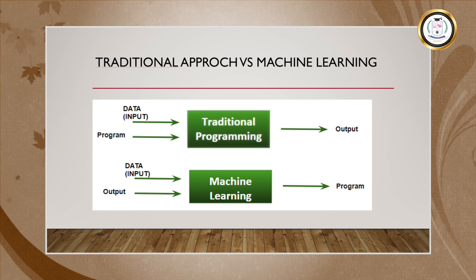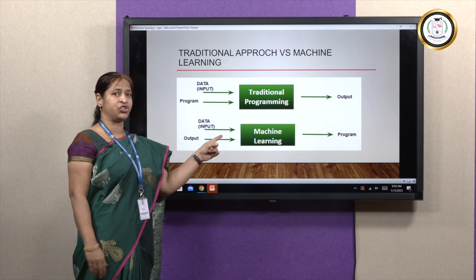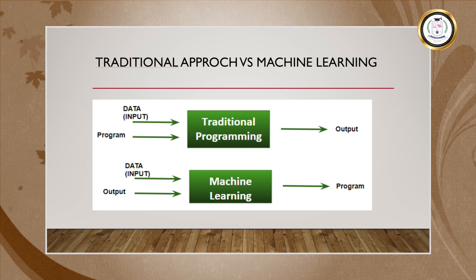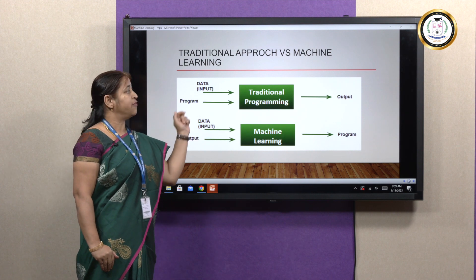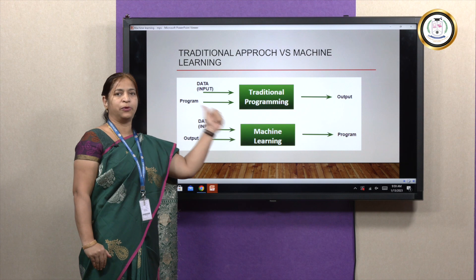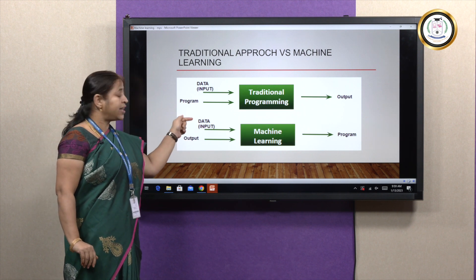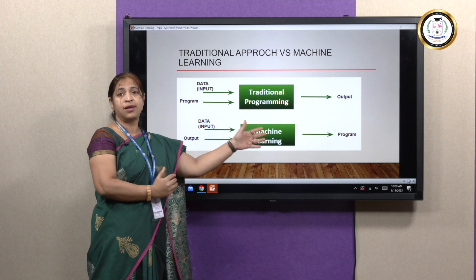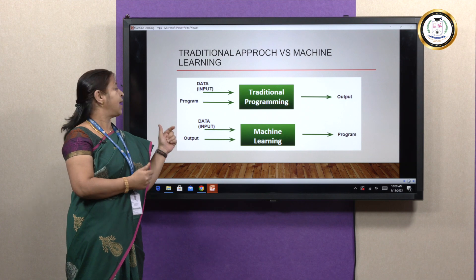Let us see the difference between traditional approach and machine learning approach. In the traditional approach, we follow programming languages like Java, C, C++ and so on. We give data — called input — along with a program or algorithm to the system, and we expect output from the system. But in the machine learning approach, we have both input and output data, and we feed those into the system where we expect the system to generate the program or algorithm itself. This is the main difference between the traditional approach and machine learning approach.